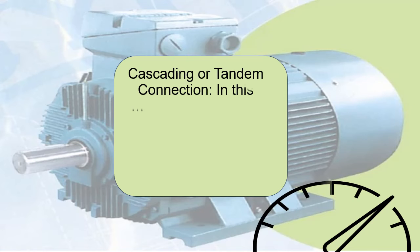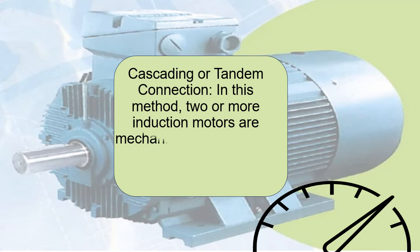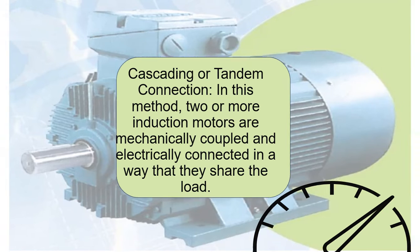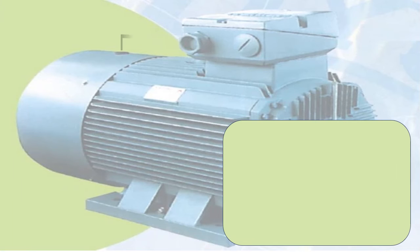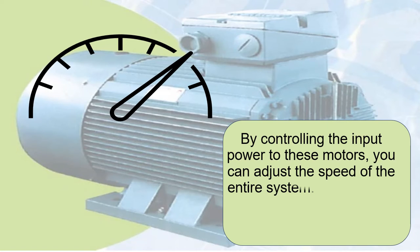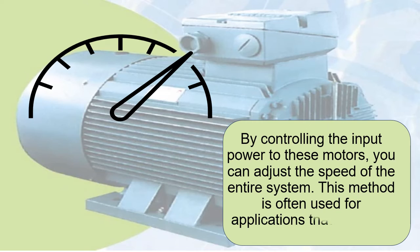Cascading or Tandem Connection: In this method, two or more induction motors are mechanically coupled and electrically connected in a way that they share the load. By controlling the input power to these motors, you can adjust the speed of the entire system. This method is often used for applications that require a wide range of speeds.